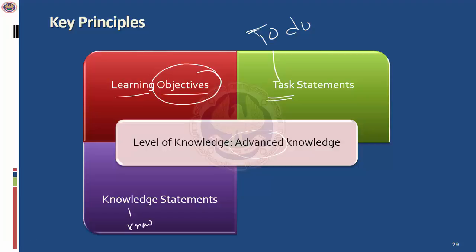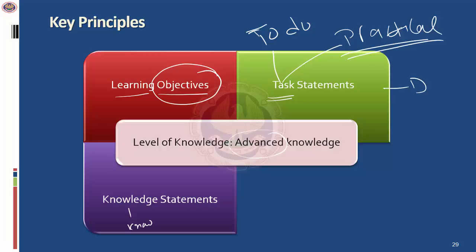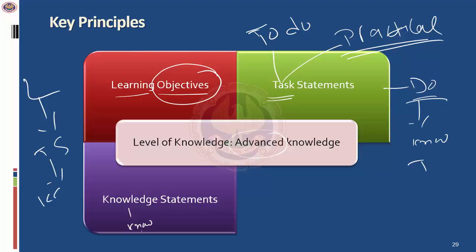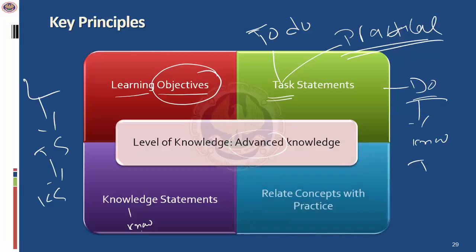The focus, from the practical point of view, is: if there's a BCP, what is it that you do in a BCP? The task statement is based on what you need to do, and the knowledge statement covers what you need to know to do it. So the flow is: learning objectives lead to task statements, which lead to knowledge statements, and the knowledge statements give concepts covered in chapters. This is the macro perspective in which the ISCA topic has been covered and presented in the chapters.